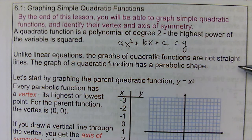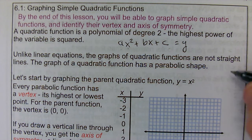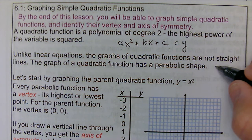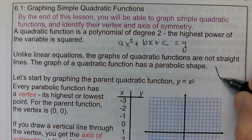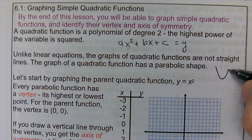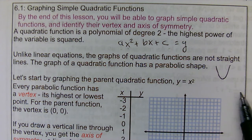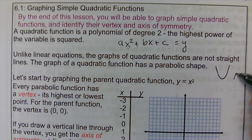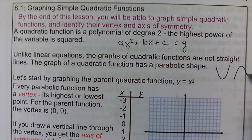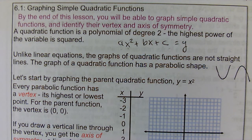The graphs of quadratic functions are not straight lines — they have the shape of a parabola. A parabola is either going to open upwards or downwards. There are parabolas that open in other directions, but in this course we're not going to deal with those.